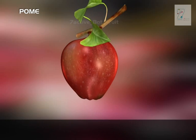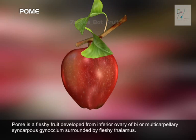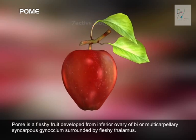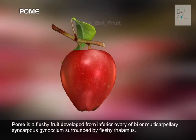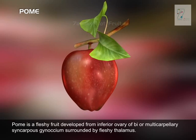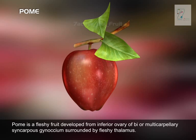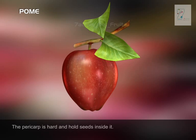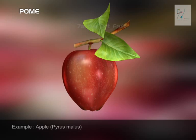Pome: Pome is a fleshy fruit developed from the inferior ovary of bi- or multicarpellary syncarpous gynoecium, surrounded by a fleshy thalamus. The pericarp is hard and holds seeds inside it. Example: Apple, Pyrus malus.